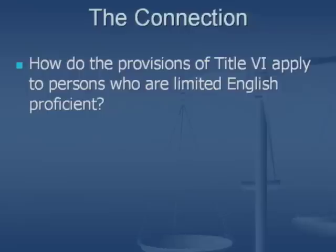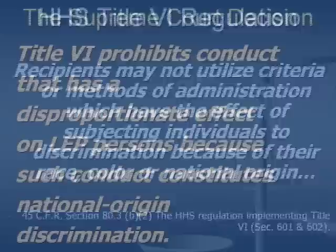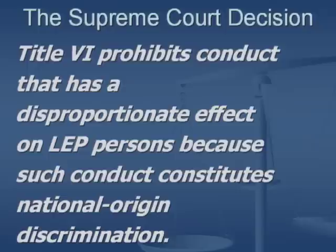What's the connection between Title VI of the Civil Rights Act of 1964 and persons who are limited English proficient? The law prohibits discrimination on the basis of race, color, and national origin — it doesn't say anything about language. The regulatory connection is the language about recipients not utilizing criteria or methods of administration that have the effect of subjecting individuals to discrimination. The connection was made by the Supreme Court in 1974 in Lau v. Nichols, which dealt with first-generation Chinese children in a public school district. The Court ruled that Title VI prohibits conduct with a disproportionate effect on limited English proficient persons because such conduct constitutes national origin discrimination, thereby extending Title VI protections to LEP persons.